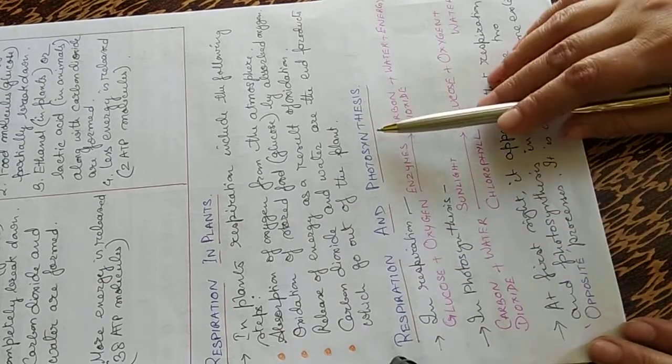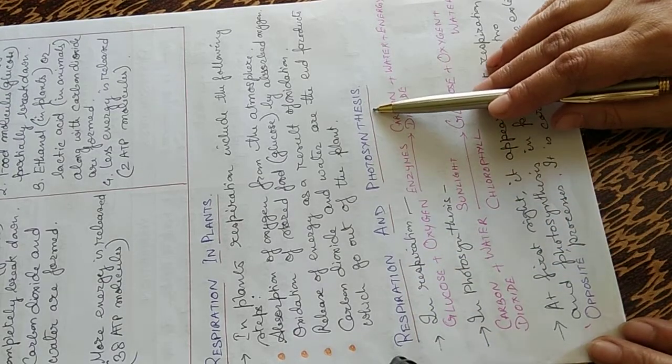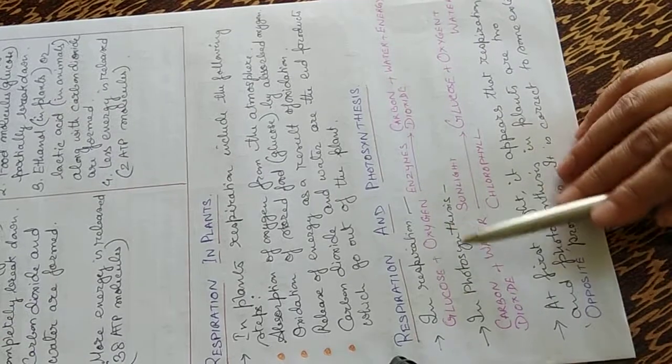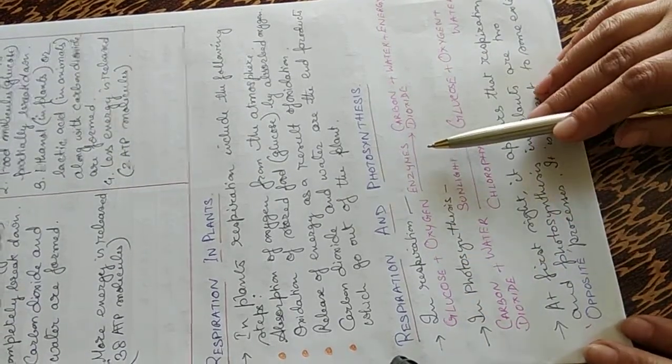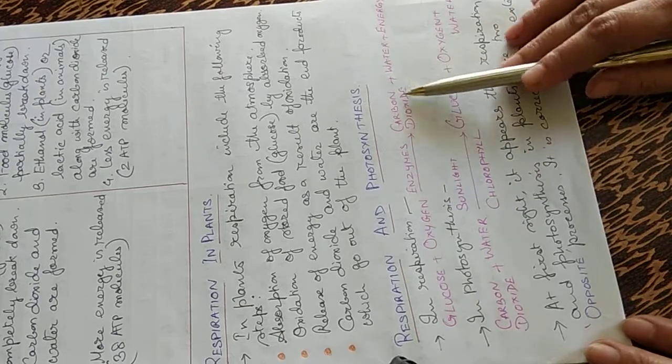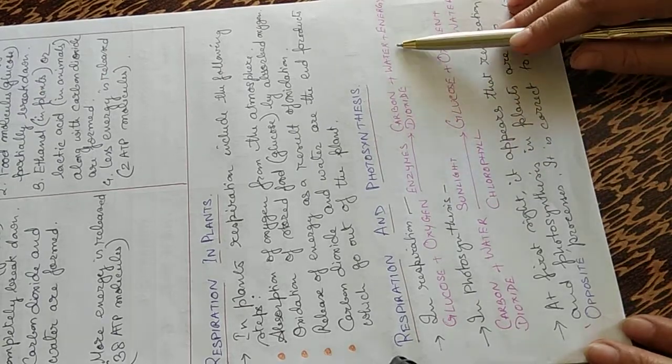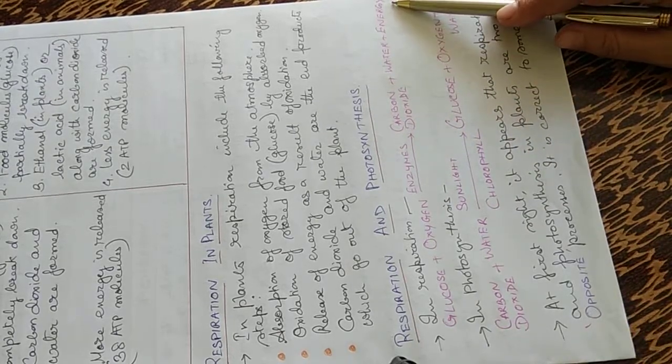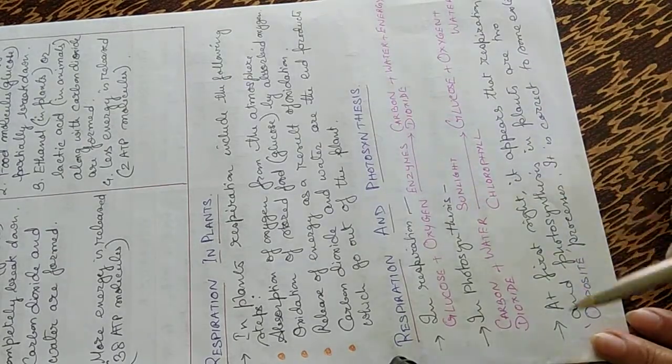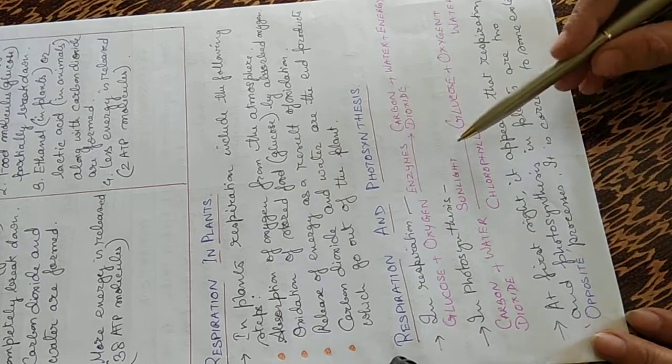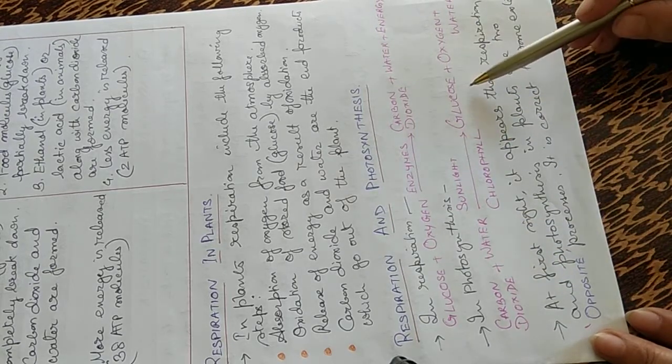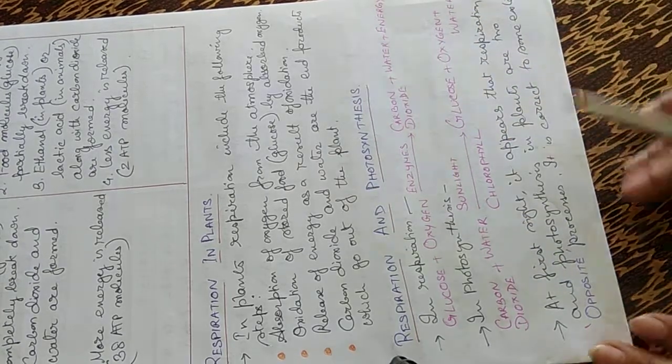Now respiration and photosynthesis. In respiration, glucose and oxygen in presence of enzymes converted to carbon dioxide, water and energy. In case of photosynthesis, the carbon dioxide is taken inside the plant and combines with water in presence of sunlight and chlorophyll to produce glucose, oxygen and water.